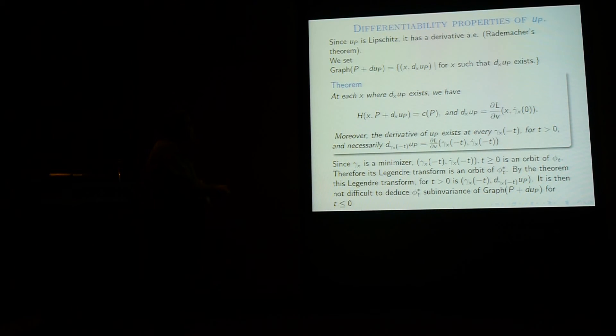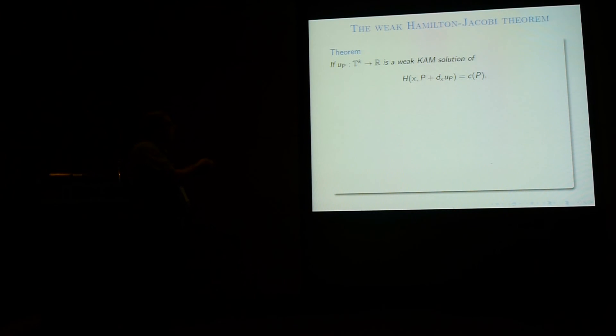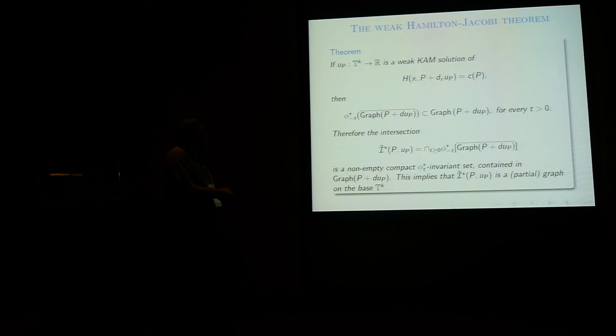The function uₚ is differentiable along the curve gamma_x except at the end time zero. That's what you can prove. And of course, because you have the differentiability, we have you have this property here, you just get that the derivative of uₚ is the Legendre transform of the speed. So if you want to find, so you take this which is an orbit for negative time of the Euler-Lagrange flow, you transform it by the Legendre transform, and you are going to get of course an orbit for the dual flow phi star. So this is what I say here. So gamma_x is a minimizer. This is an orbit by phi_t. Therefore its Legendre transform is an orbit of the dual flow. By the theorem, the Legendre transform is exactly of the form gamma_x minus t derivative of uₚ at gamma_x minus t. Of course, this tells you that you have sub-invariance in backward time.